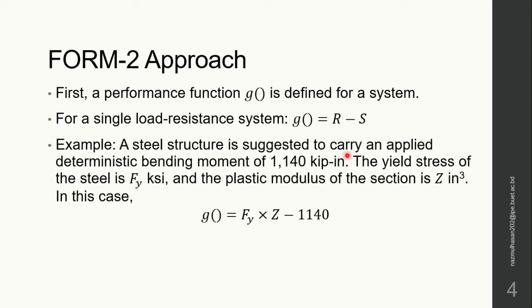Here, a steel structure is suggested to carry an applied deterministic bending moment of a given value. The yield stress is designated by Fy, ksi, and the plastic modulus of the steel structure is designated by Z. Then from this expression we can have our performance function where the resistance is the product of the yield stress and the plastic modulus, minus the single load which is the bending moment.